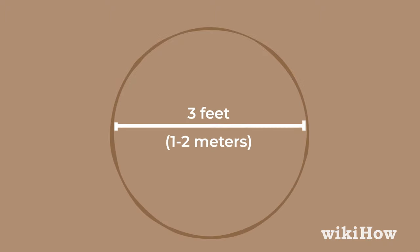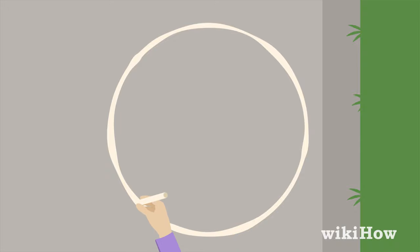To set up the game, make a circle on the ground that's about three feet, one to two meters in diameter. You can draw a circle in dirt, make a circle using string, or draw a chalk circle on the sidewalk.